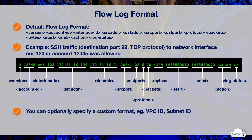You can optionally specify a custom format for the flow log record. For example, you can include more fields such as VPC ID and subnet ID. For a custom format, you specify which fields to return in the flow log record and the order in which they should appear. A custom format can also help reduce the need for separate processes to extract specific information from published flow logs. You can specify any number of the available flow log fields, but you must specify at least one.